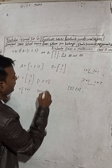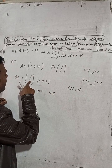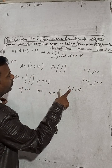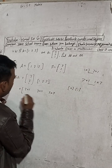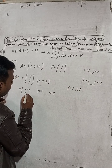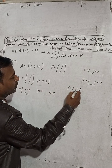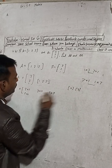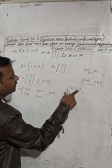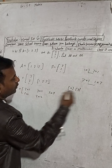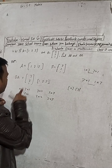Now take the second row. Second row is 2, and first column is 1, so 2×1. Second row, second column: 2×2. And second row, third column: 2×3.